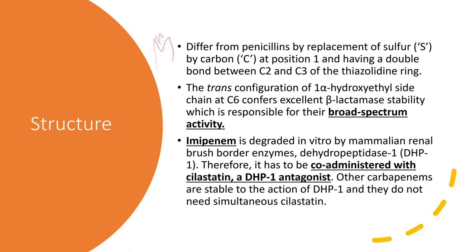To summarize the structure: carbapenems differ from penicillin by replacement of sulfur by carbon at position one, and by having a double bond between C2 and C3 of the thiazolidine ring. The trans configuration of the 1-alpha hydroxy ethyl side chain at C6 confers excellent beta-lactamase stability, which is responsible for their broad-spectrum activity.